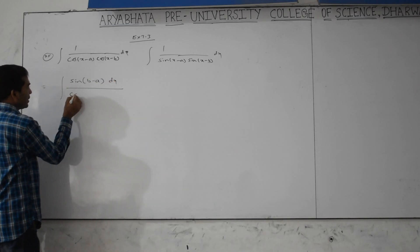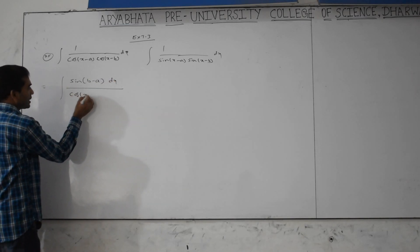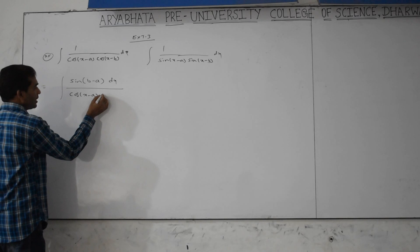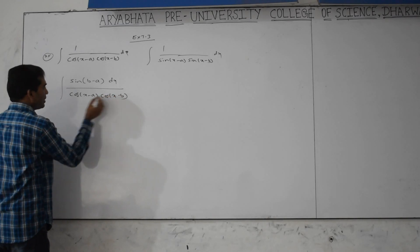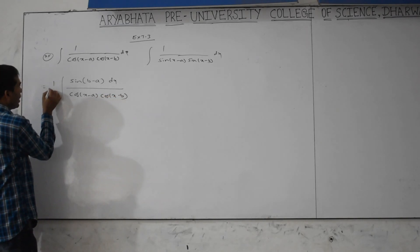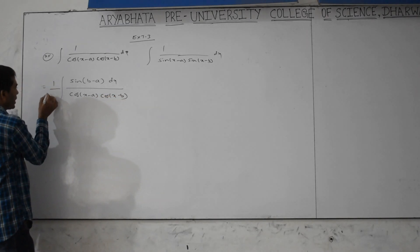Sin(b minus a) is a constant. We multiply by sin(b minus a) in numerator and denominator, giving integration of sin(b minus a) divided by cos(x minus a) into cos(x minus b), times 1 by sin(b minus a).